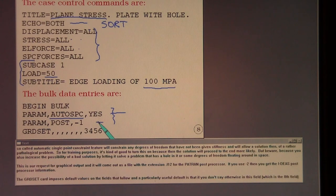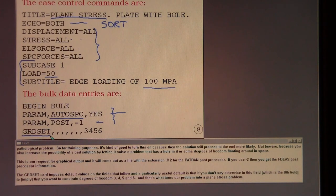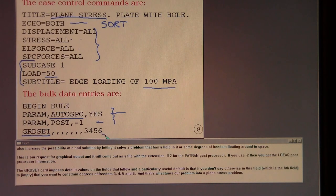This is our request for graphical output and it will come out as a file with the extension dot F12 for the Patran post processor. If you use minus two then you get the IDEAS post processor information. The grid set card imposes default values on the fields that follow. And a particularly useful default is that if you don't say otherwise in this field, which is the eighth field, to say that you want to constrain degrees of freedom three, four, five, and six. And that's what turns our problem into a plain stress problem.